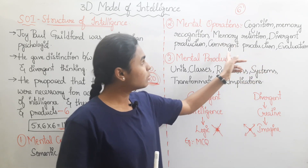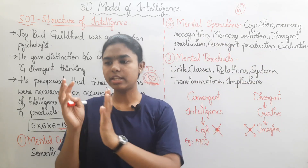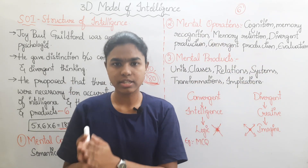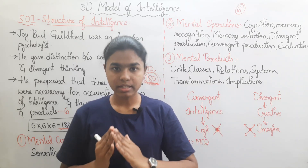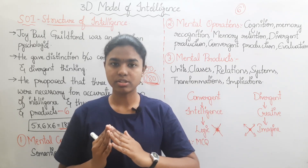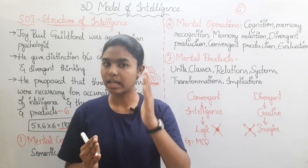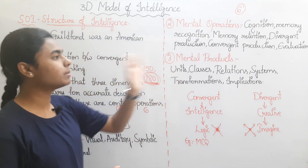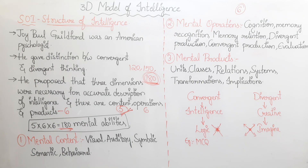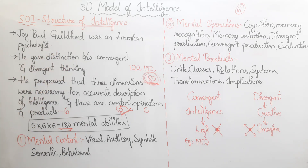Evaluation is the ability to judge whether a solution is accurate and correct. So the second dimension, Mental Operations, has six mental abilities: cognition, memory recognition, memory retention, divergent production, convergent production, and evaluation.